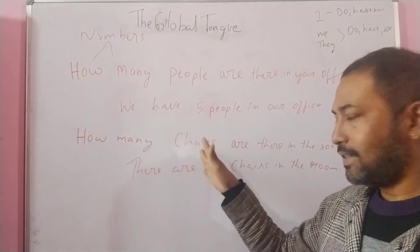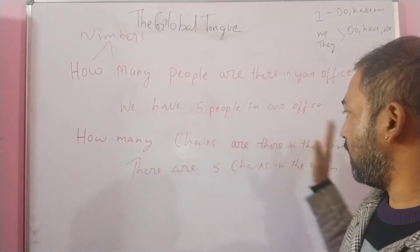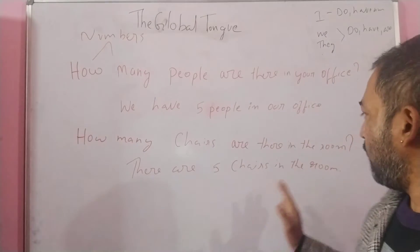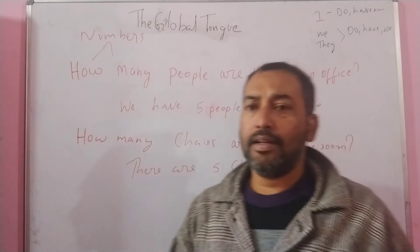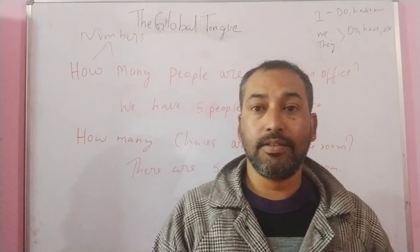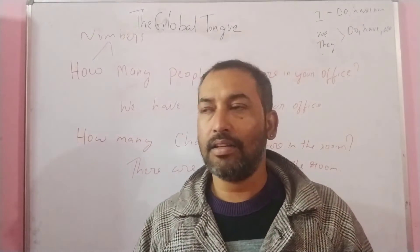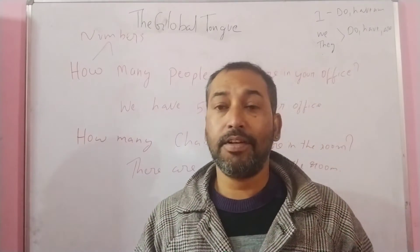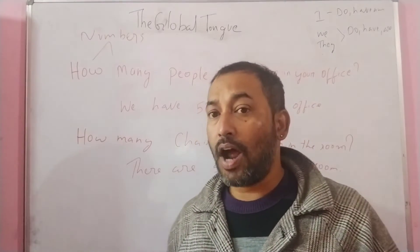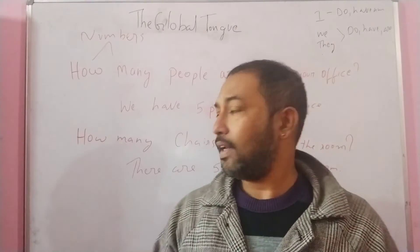So in this way, we have to use 'how many' every time. There are five chairs in the room. The next question would be: 'How many celebrities are there in Hollywood?' — 'There are a lot of celebrities in Hollywood.' And 'How many cars do you have in the house?' — 'I've got five cars in my house.' Or 'How many cell phones do you have?' — 'I've got five cell phones.'